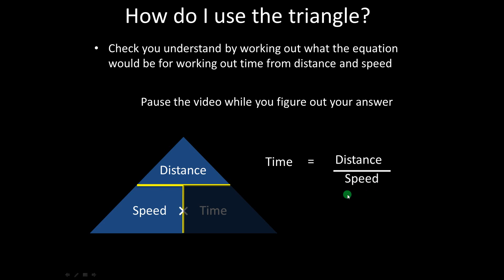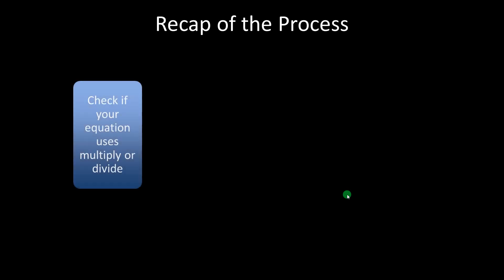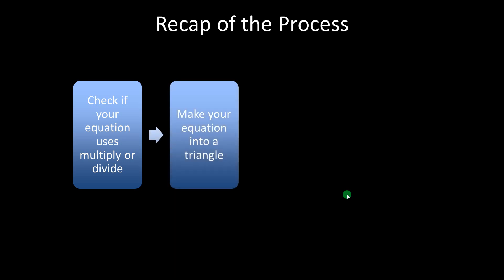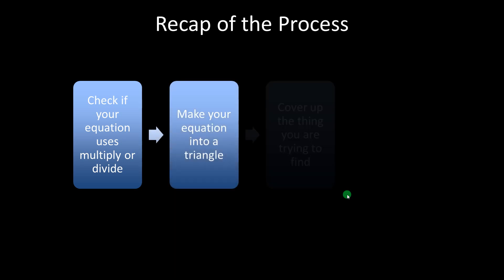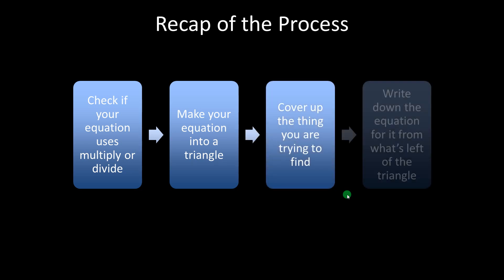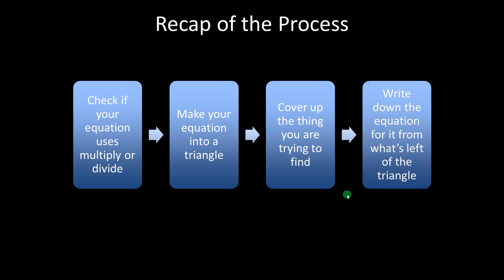To recap the process: first, check if your equation uses multiply or divide. Second, make the equation into a triangle using the appropriate method. Third, cover up the thing you're trying to find in the triangle. Fourth, whatever's left gives you the equation for that quantity. You then substitute the numbers you have into that equation — that's a separate process, and there are usually separate marks for rearranging in a multi-mark calculation question.